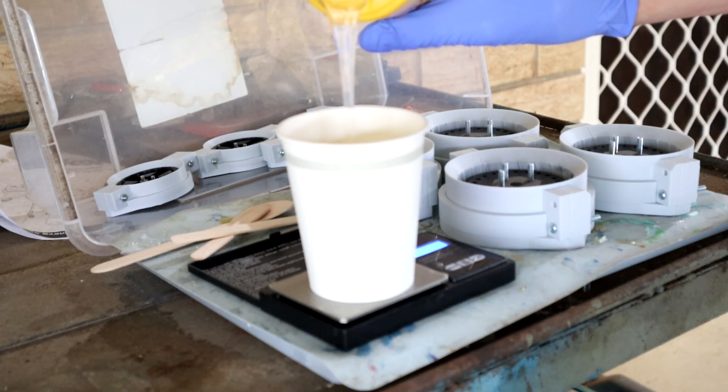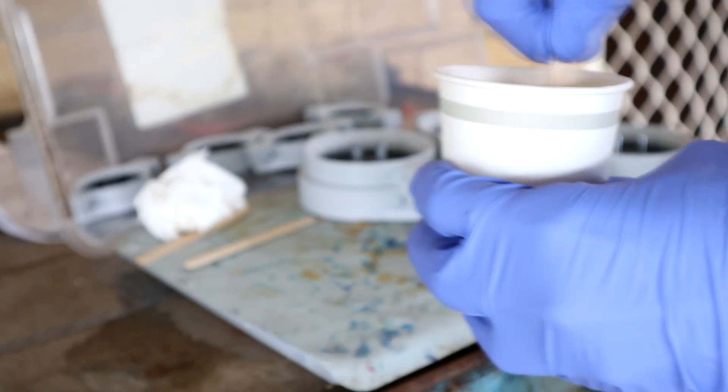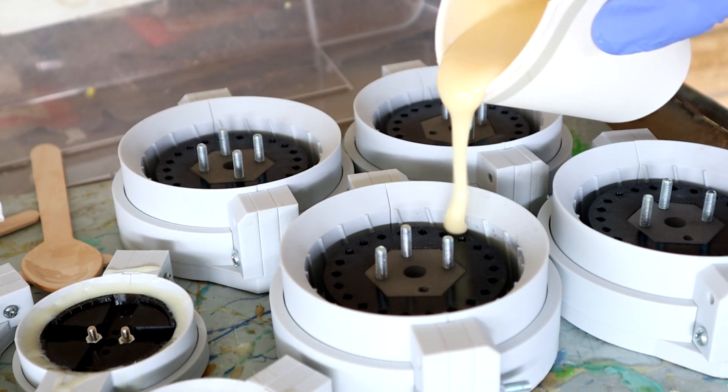And then we are going to mix up a big batch of polyurethane. This is a 60A shore polyurethane which is quite hard but for a 13 kilo robot that is definitely necessary. And then it gets poured into all of the molds and left to cure.